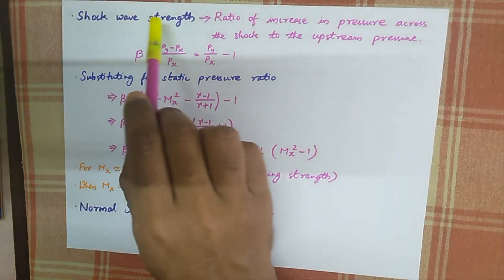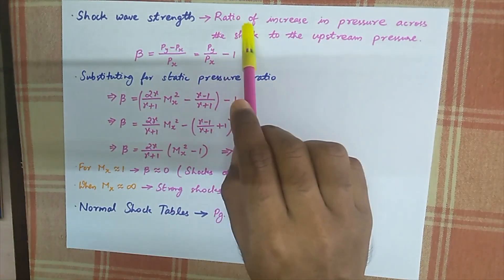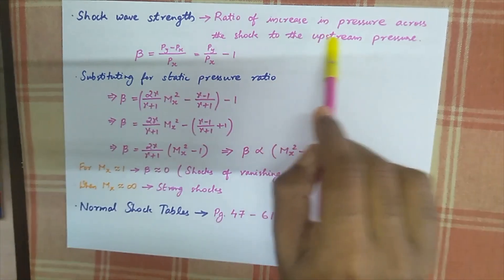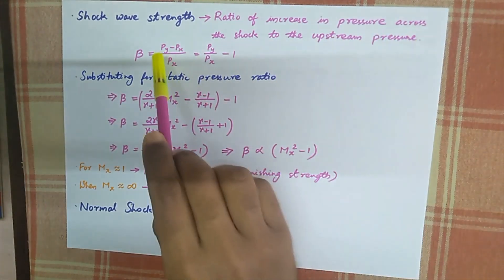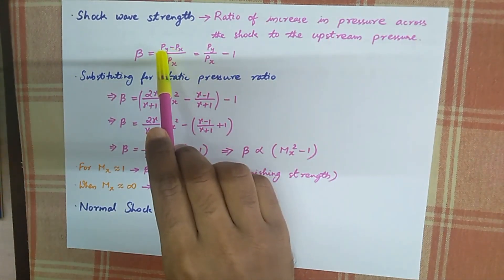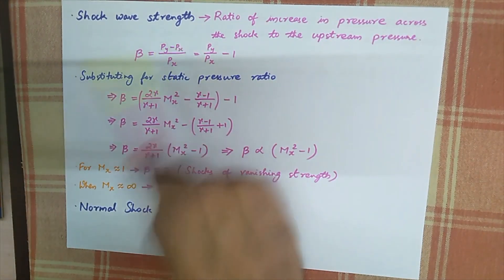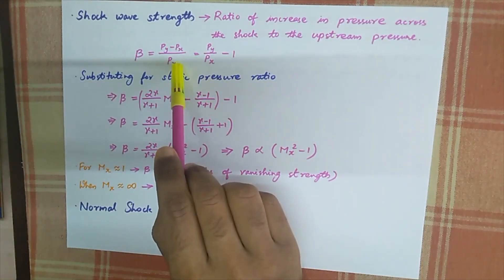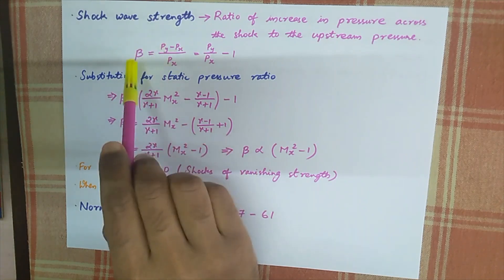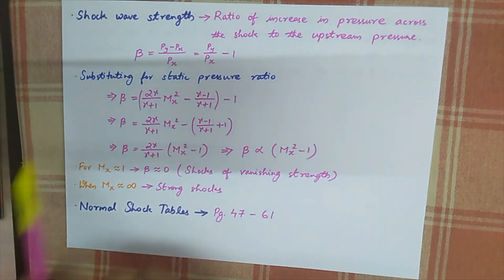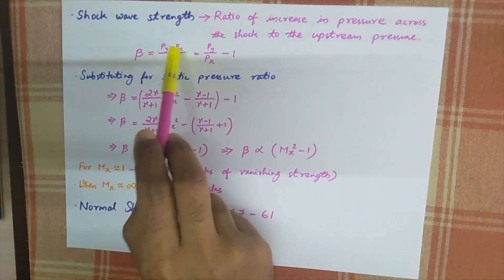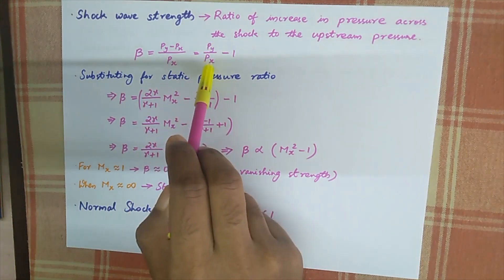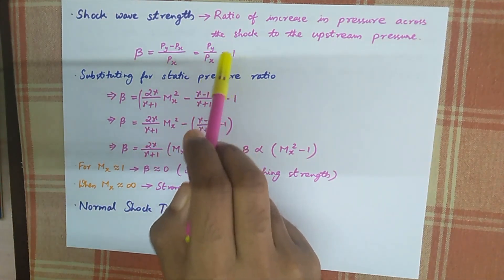Now let's look at the shock wave strength. It is the ratio of increase in pressure across the shock to the upstream pressure — that is, (P_y - P_x) / P_x — which equals P_y/P_x - 1. This ratio is defined as the shock wave strength beta.